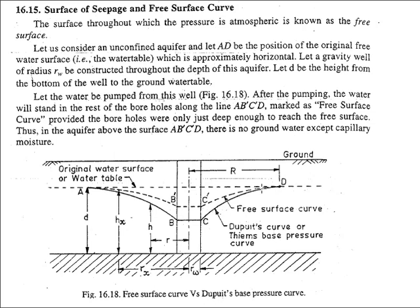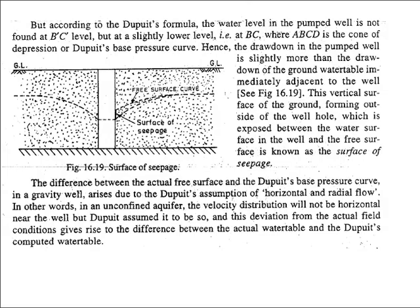The free surface curve and Dupuit's curve are two important concepts. The free surface curve is the surface on which the pressure equals atmospheric pressure. Whenever asked what the free surface is, the answer is: the surface having a pressure equal to atmospheric pressure. When the well is dug, the actual free surface is indicated by A-B'-C'-D. But according to Dupuit's assumption, the free surface is A-B-C-D.